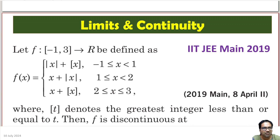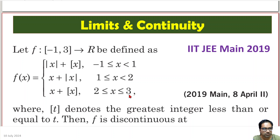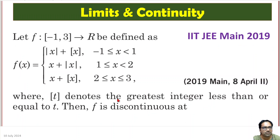Hi friends, here is a basic problem that came in JEE 2019. This is based on the greatest integer function and absolute value of a function. You are given this function when x is between minus 1 to 1 something, 1 to 2 something, 2 to 3 something. Now, when is this function continuous or discontinuous — that is the question.